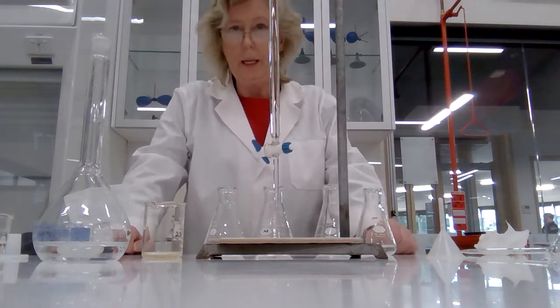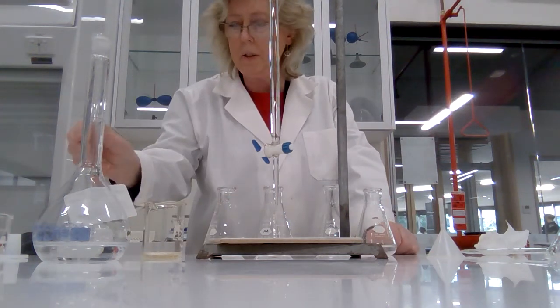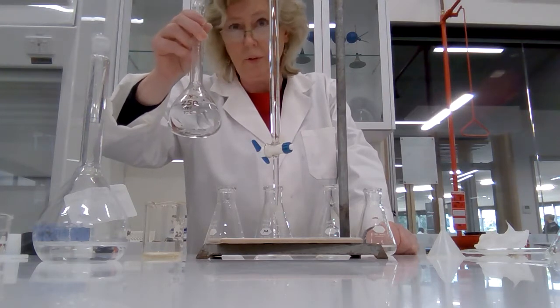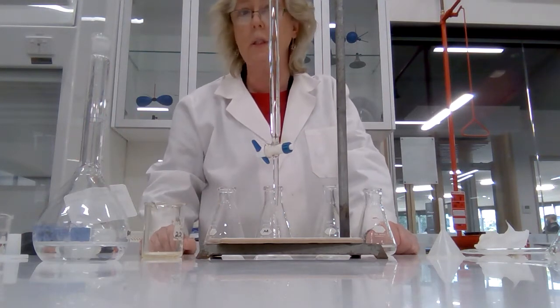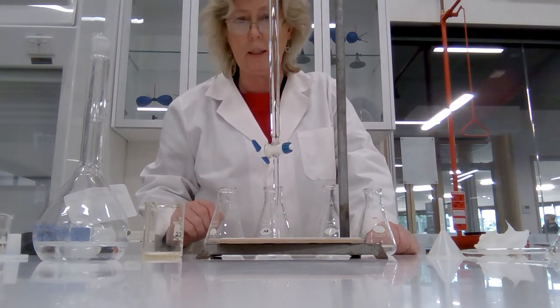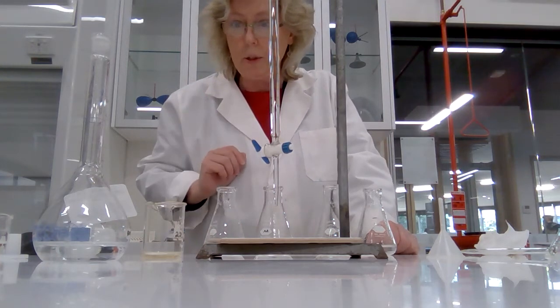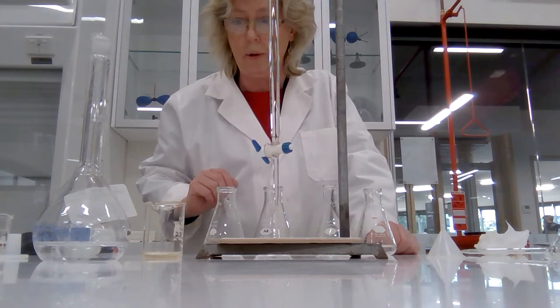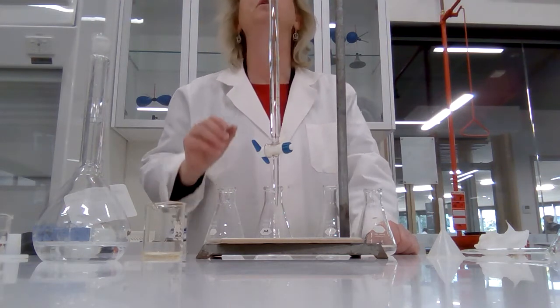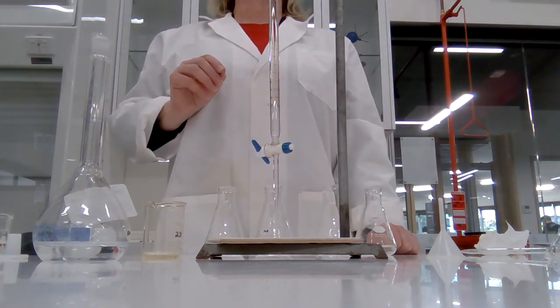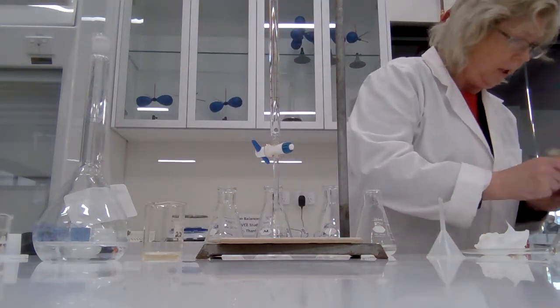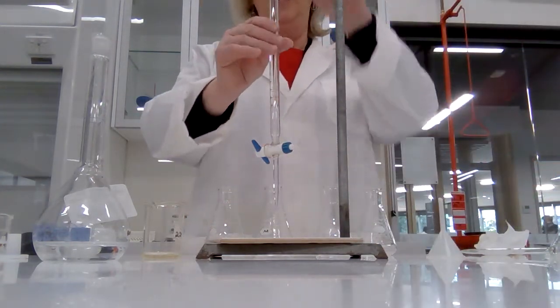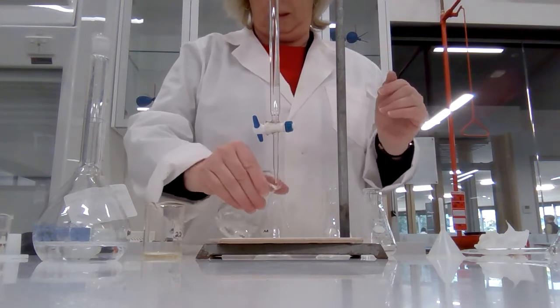All right, we are doing the titration of a vinegar solution that's been made up in the 250 ml volumetric flask with sodium hydroxide, which has previously been standardized at a concentration of 0.1036 moles per decimeter cubed. So the starting volume is 1.90 milliliters, and let's see how good we can be with this.